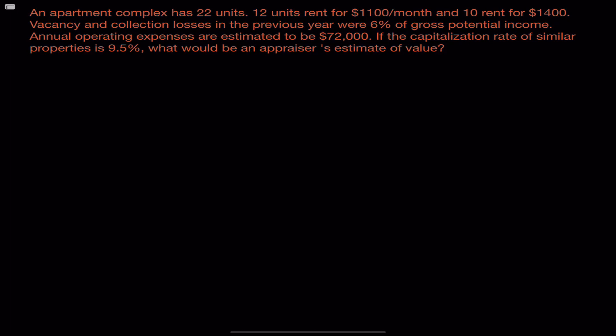So to start this problem, let's look at the total number of units we have. 22 total units. And we know that 12 are going to rent at $1,100 a month. And that means they'll bring in $13,200 monthly. Now when we're doing these problems, we're going to need annual figures. So we'll multiply that by 12 for each of the months in the year. And that gives us a total of $158,400.